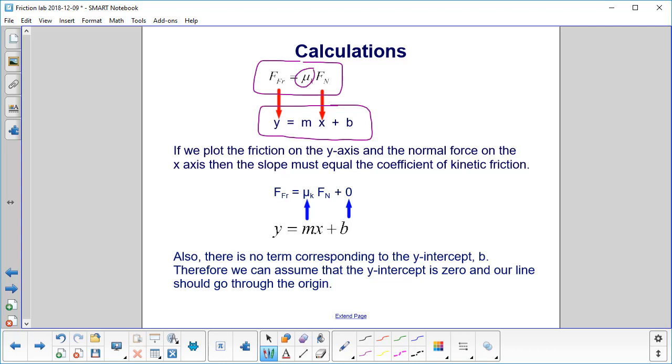So we're going to plot friction on the y-axis and normal force on the x-axis. That means the slope must be the coefficient of kinetic friction. Notice there is no term corresponding to the y-intercept b. Therefore, we can assume that the y-intercept is zero and our line should go through the origin.